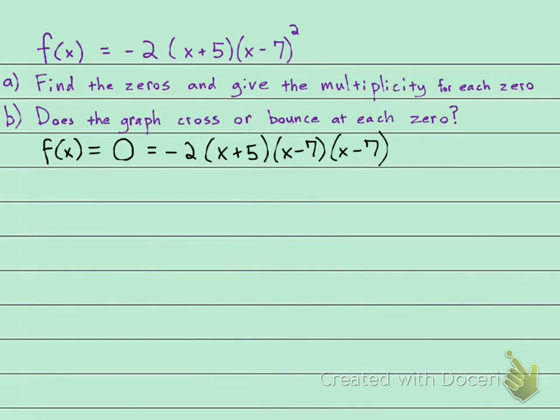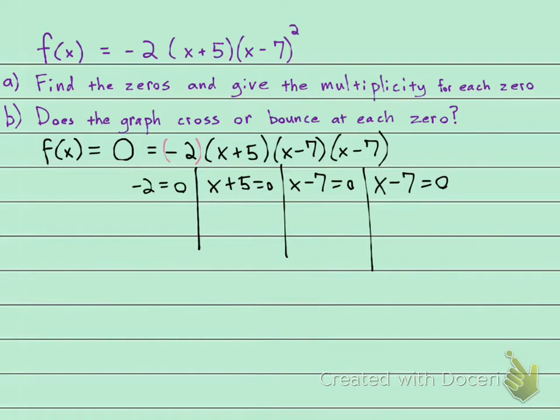Now, what I'm looking for is any number for x that would make this whole thing zero. So I take all of my factors and I set them equal to zero. Negative 2 is zero, x plus 5 is zero, x minus 7 is zero, and x minus 7 is zero. Is negative 2 equal to zero? No, negative 2 is not equal to zero. There's no way that will ever happen.